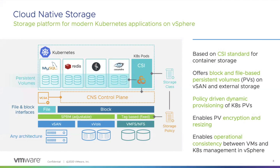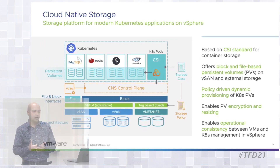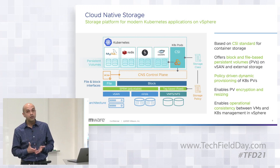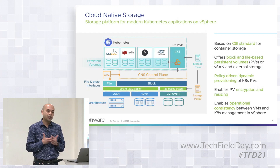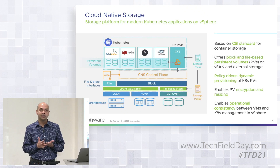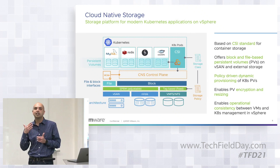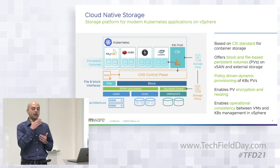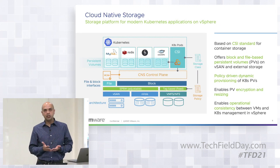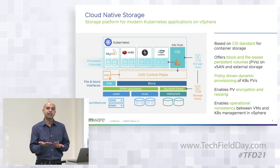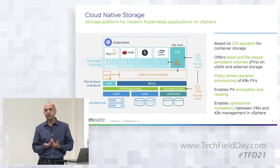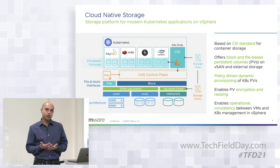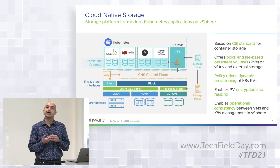Moving on to cloud-native storage — the storage platform we offer for modern Kubernetes applications running on vSphere. The first iteration was released in vSphere 6.7 Update 3 around August of last year. Cloud-native storage is based off the CSI standard, which is the out-of-tree storage plugin for Kubernetes. We have our vSphere CSI driver released last year. With vSAN 7, you are able to get block-based persistent volumes on vSAN, VMFS, NFS, and vVOL.